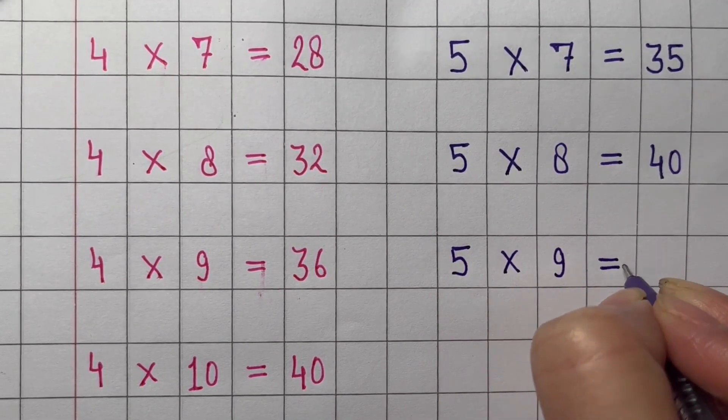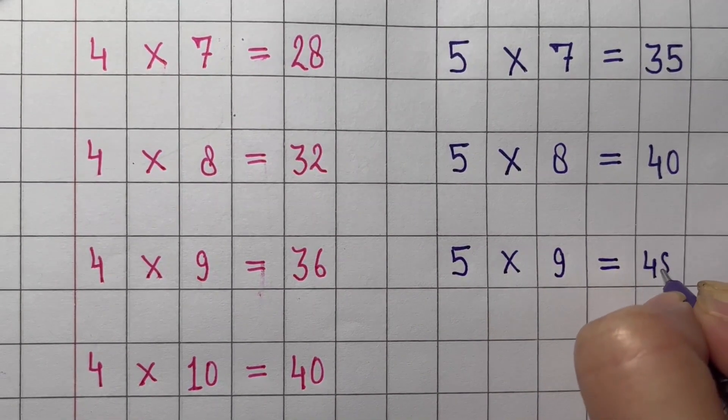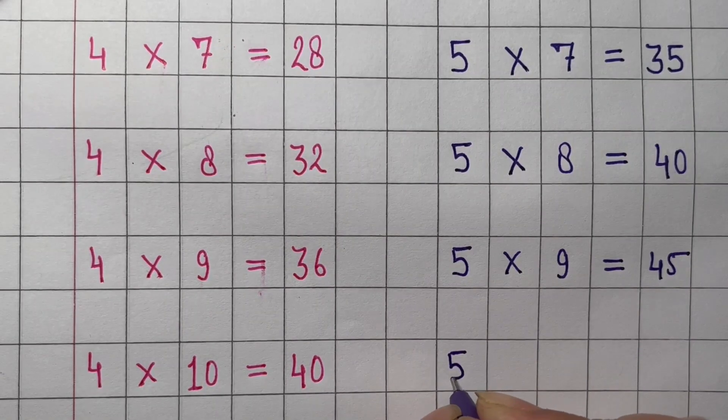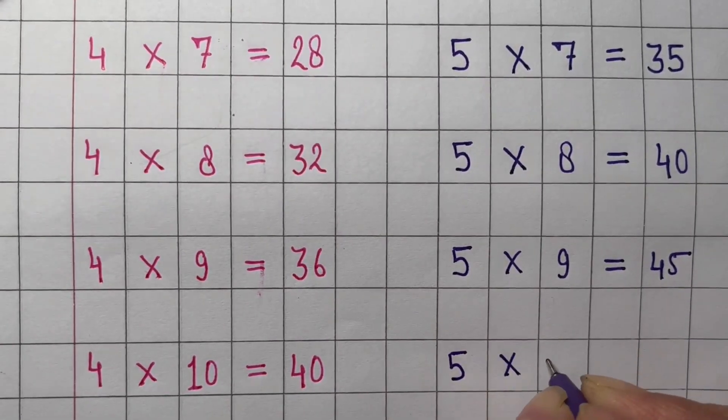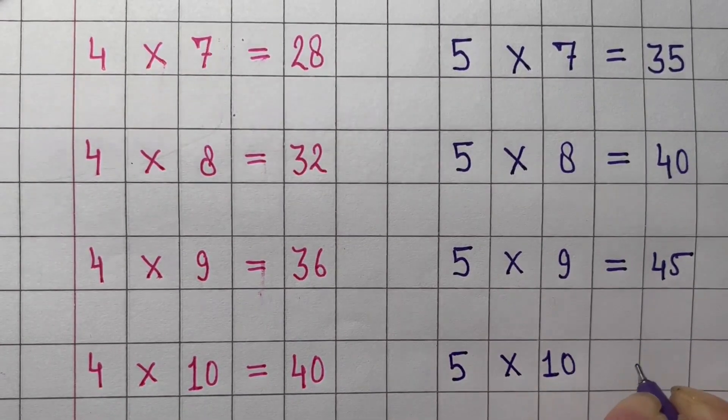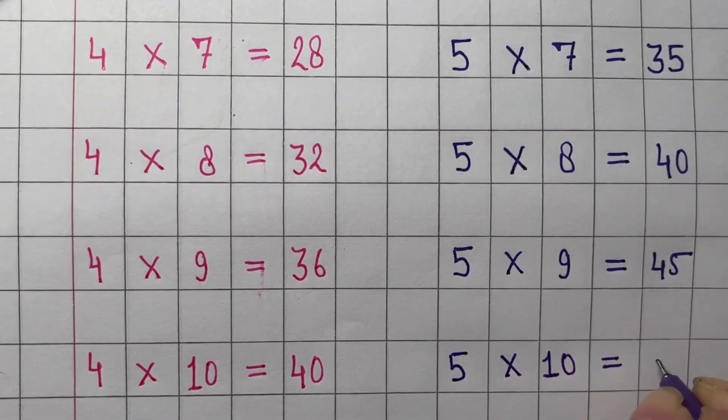Nine times 5 equals 45. Ten times 5 equals 50.